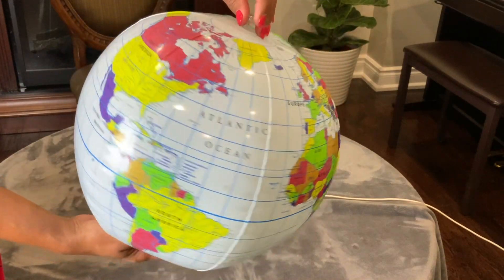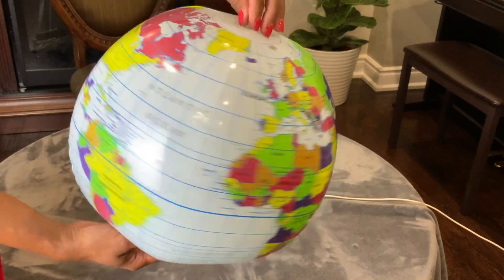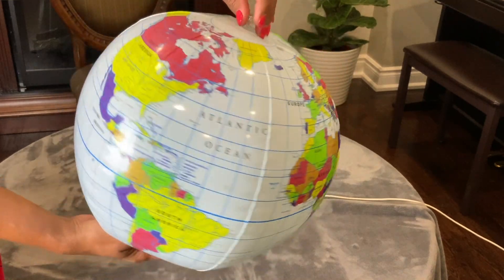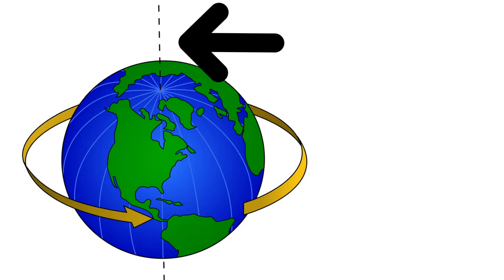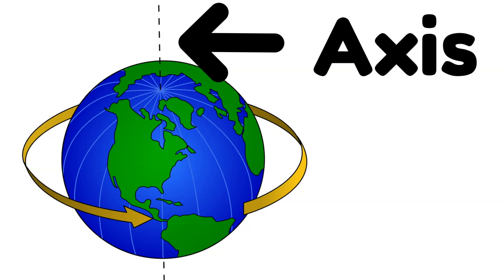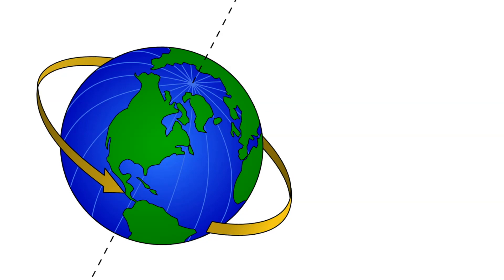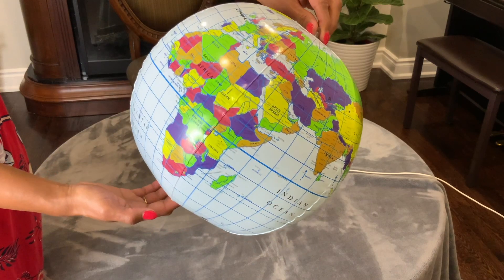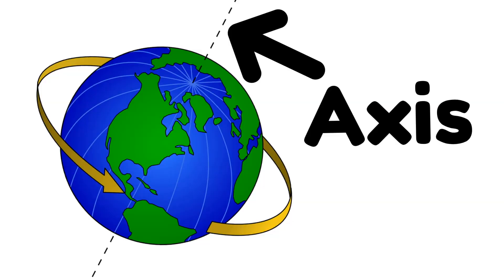As it goes around, the Earth also spins around as it moves, just like this. The imaginary line that the Earth spins around is called the Axis. The Earth does not spin straight up — it spins in a tilt. The axis is tilted. This is what causes the seasons.